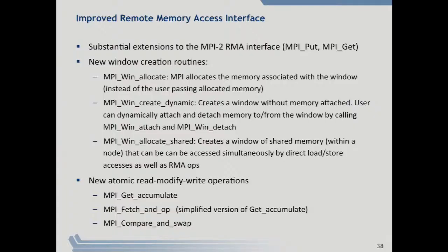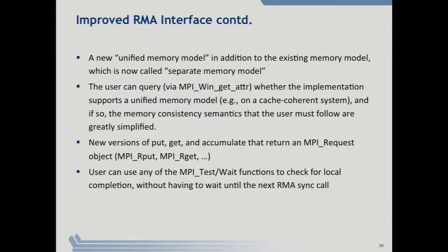The improved RMA interface includes new functions for creating windows: win-allocate, win-create-dynamic, and win-allocate-shared, which allows you to create shared memory within a node and access it using loads and stores. There are new atomic read-modify-write operations where you can do a get and an accumulate — a fetch-and-increment type of operation atomically, which was missing in MPI2. There's also a compare-and-swap and a new unified memory model that makes things simpler.